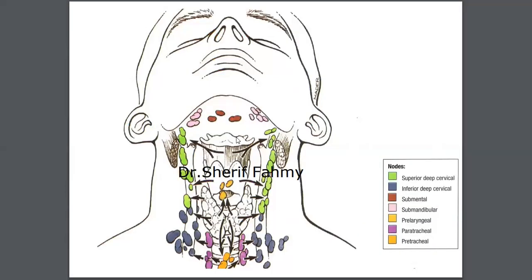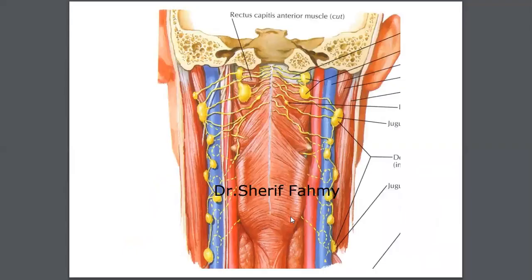The ones shown in green color are the superior deep cervical group of lymph nodes; the ones in blue are the inferior deep cervical group. Below the chin is submental, below the mandible is submandibular, in front of the larynx is pre-laryngeal, and in front of the trachea is pre-tracheal. This picture is taken from behind — you can see the skull bone and the pharyngeal muscles: superior, middle, and inferior constrictor group.